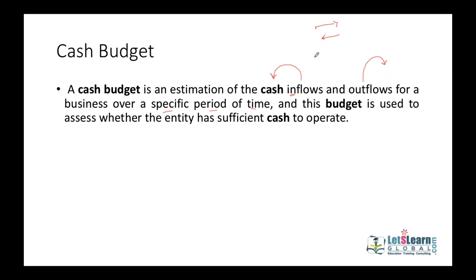Cash comes into the business when we sell goods on cash, provide services on cash, receive commissions or interest, sell assets or investments, borrow money, or raise capital. Core sources of cash inflows include cash sales, collections from customers for credit sales, dividends, interest on investments, sale of assets, sale of investments, borrowings, and raising of capital.